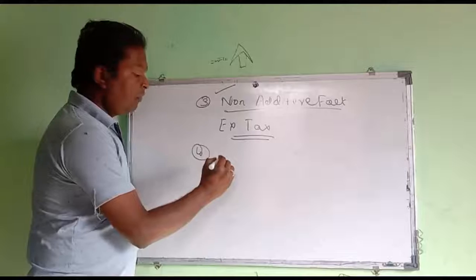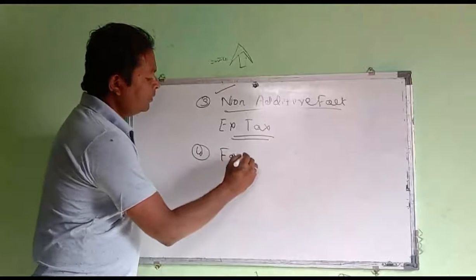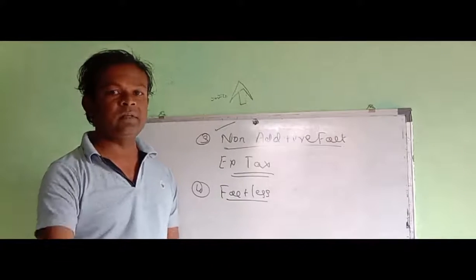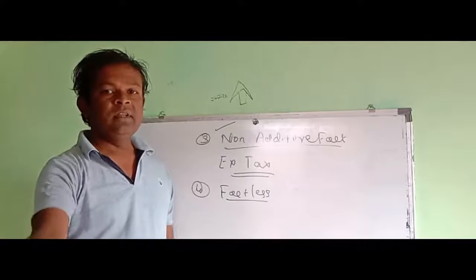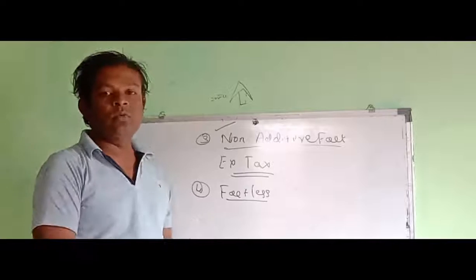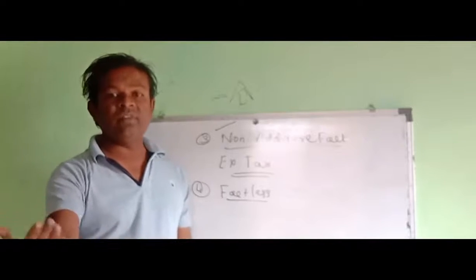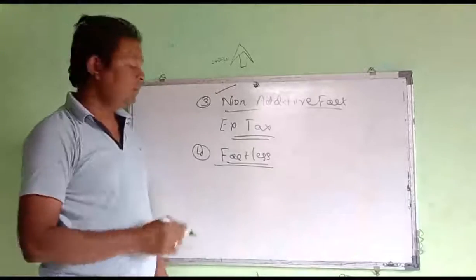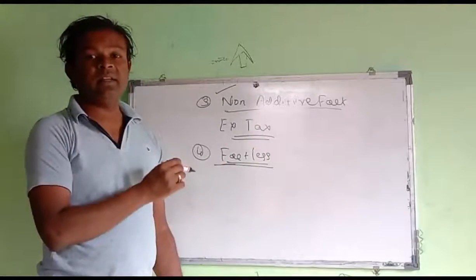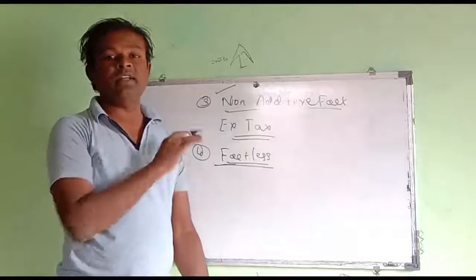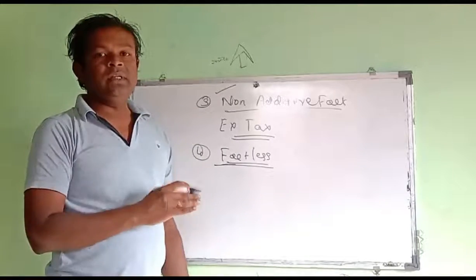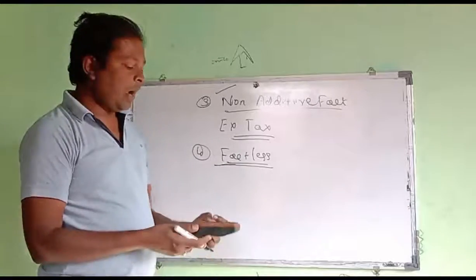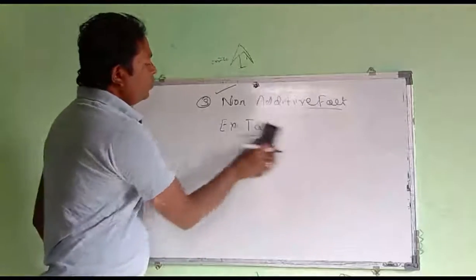A Factless Fact Table is a fact table that does not contain any fact values — it only contains foreign keys. So these are the types of fact tables.